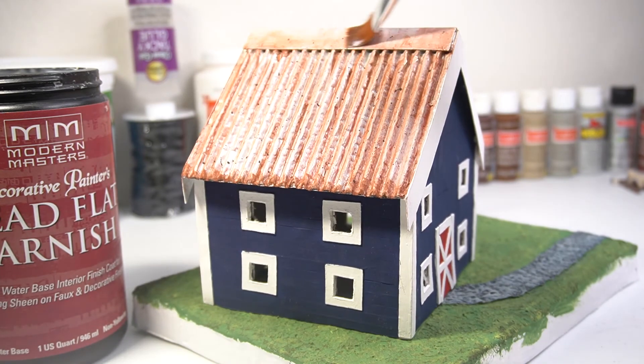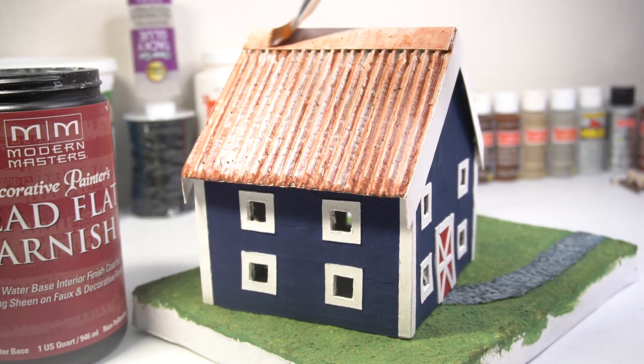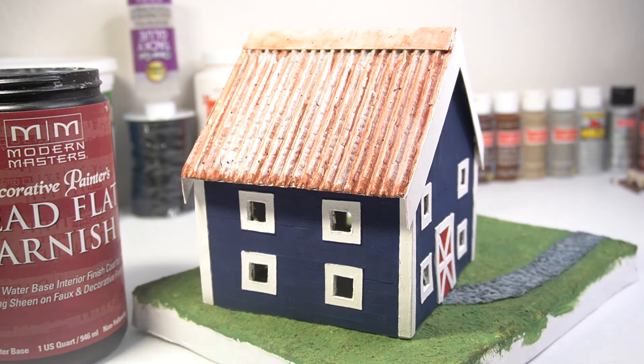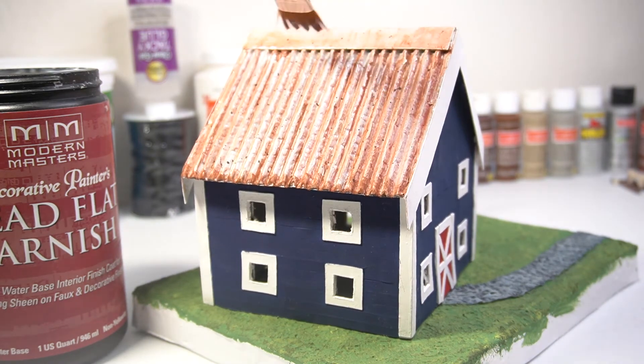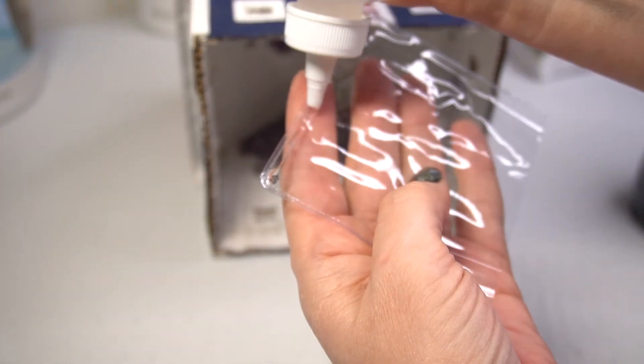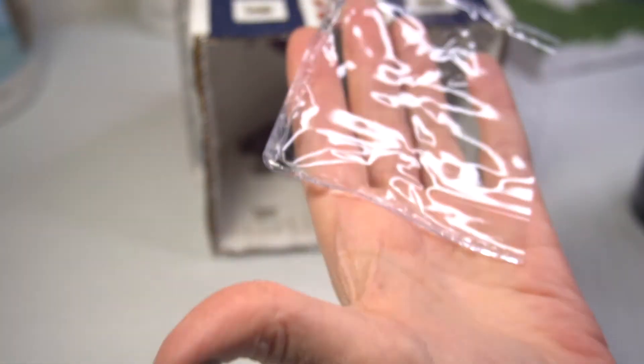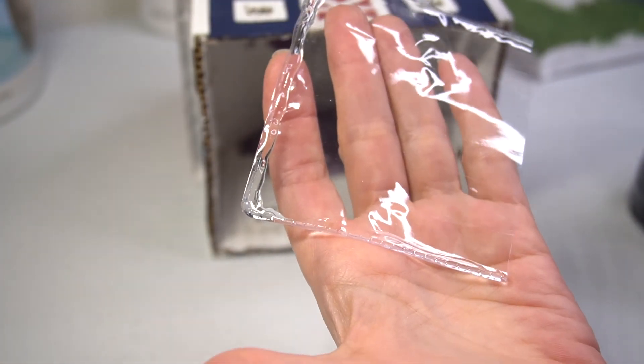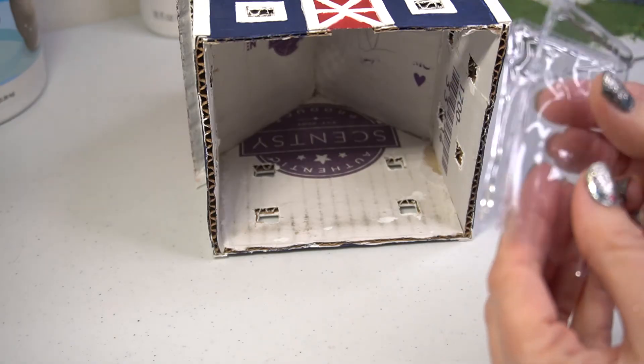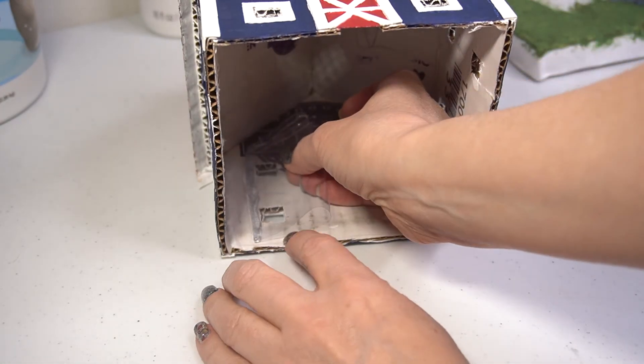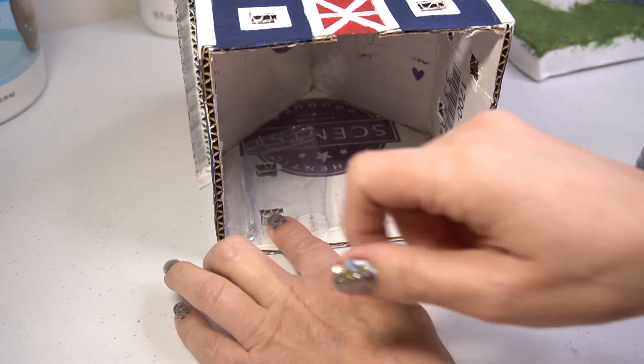Then, I used my favorite Modern Masters Dead Flat Varnish to dull out the roof. The last thing to add were windows. I used the bag that my clay sculpting tools came in and cut it down so it would fit all four windows at the same time. More Alline's held these securely in place.